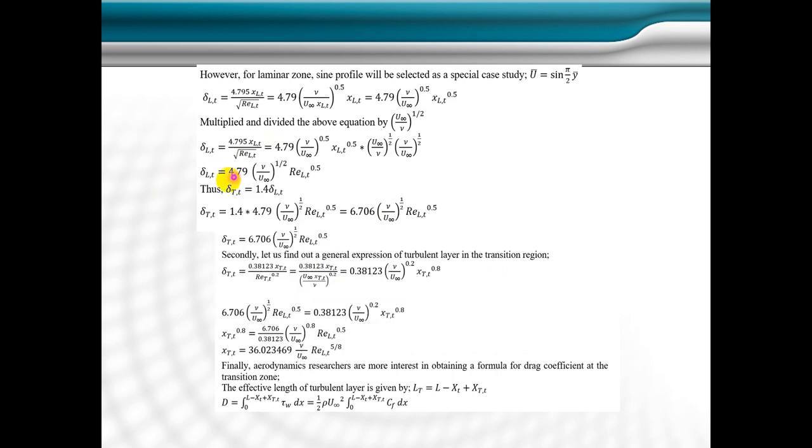I will show you this relation. Boundary layer thickness in the turbulent region is nothing but 1.4 of its value in the laminar region. We select as a special case study the sinusoidal velocity profile in the laminar region. We take the necessary mathematical manipulation in order to find out this relation of boundary layer thickness in the laminar boundary layer in the transition region in terms of Reynolds number.